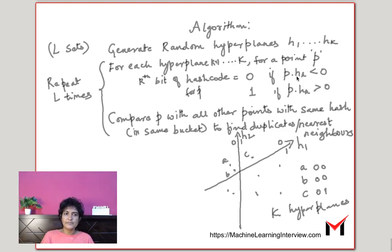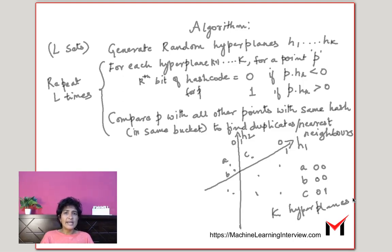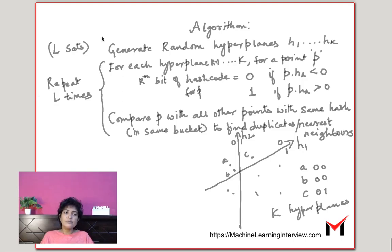This is how we generate a hash code. Our goal is to maximize the probability that points close by in the actual space end up in the same bucket or have the same hash. It's possible that a hyperplane goes between nearby points and puts them in different buckets. To minimize this possibility, we repeat the whole process L times. Each time we generate K hyperplanes and produce another hash value for each point. So we have L different hash codes for each point, each of length K.